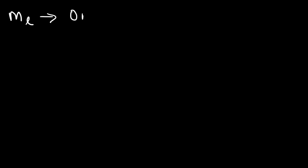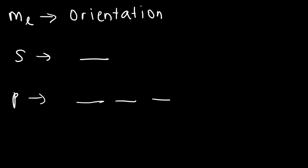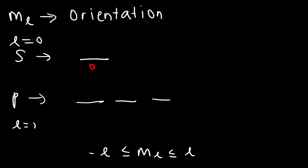The next quantum number you need to know is the magnetic quantum number, m sub L. m sub L describes the orientation of the orbital relative to other similar orbitals in that atom. The s sublevel has only one orbital, and since L is zero, m L has to be zero. The p sublevel has three orbitals; since L is one, m L will vary between negative one and one, including zero.